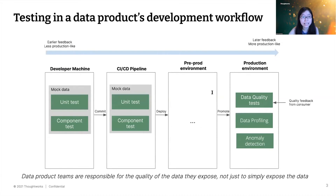Looking at a single data product, code goes from left to right in its journey to production. On the developer machine, there are a few tests useful for data engineers: unit tests and component tests, both used to test transformations at different levels. Unit tests are at function level — for example, a Spark function that transforms one data frame to another. Component tests operate at a data pipeline or job level.